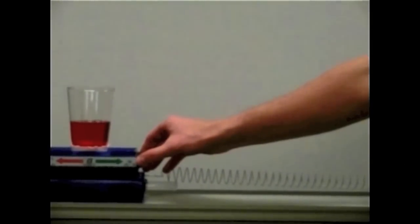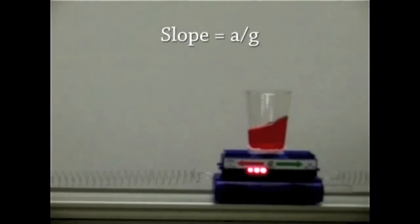Now take a look at this. If we allow this regular cup to accelerate horizontally, we see that there is sloshing sloped in proportion to the horizontal acceleration compared to gravity.